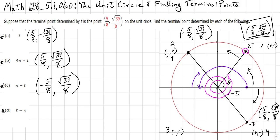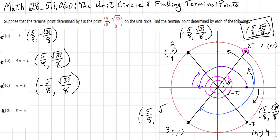Finally, part D is t minus π. Starting from our initial terminal side, we subtract π, meaning we rotate π radians in a negative (clockwise) direction — the same as rotating 180 degrees clockwise. This places the new terminal side in the third quadrant, where both X and Y are negative, giving the ordered pair (−5/8, −√39/8).